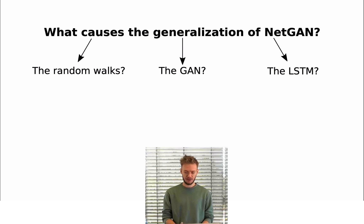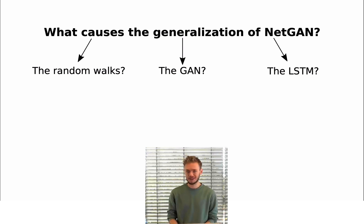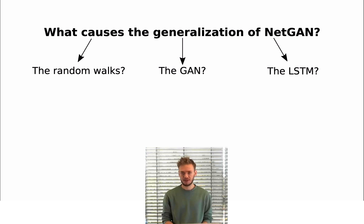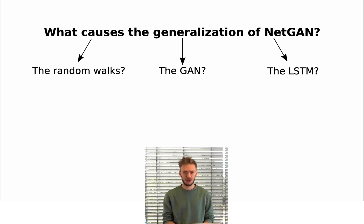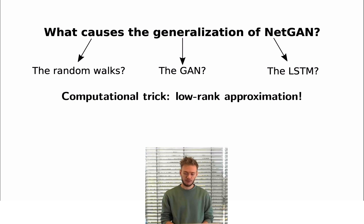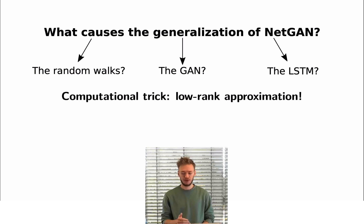What we did is scrutinize every individual component of NetGAN on a conceptual level and ask whether this component can force the model to generalize. So is it the fact that graphs are reduced to random walks? Or is it the GAN itself? Or maybe the LSTM architecture that is used within the GAN? But we find that none of these components can explain why the model generalizes. Instead, we find that only a low rank approximation, which is used somewhere in between to reduce computational complexity, forces this model to generalize a graph.